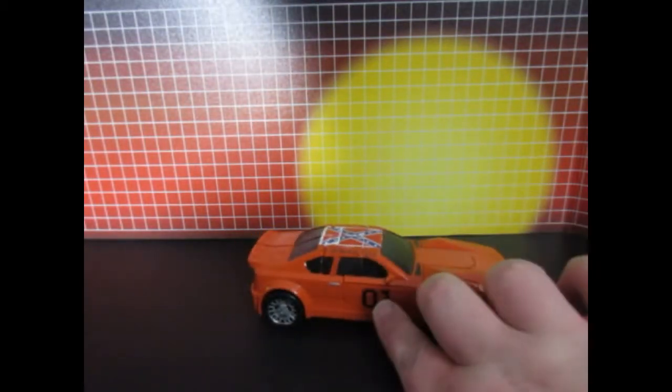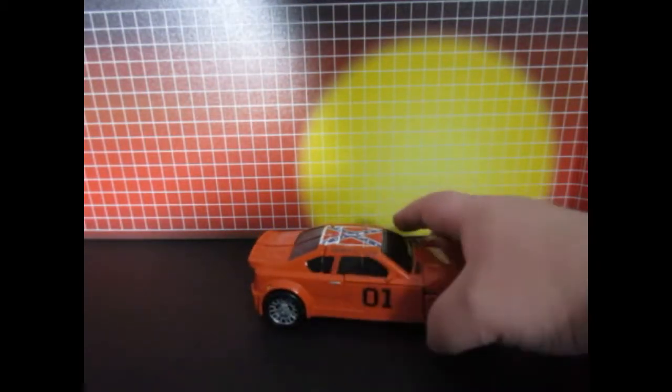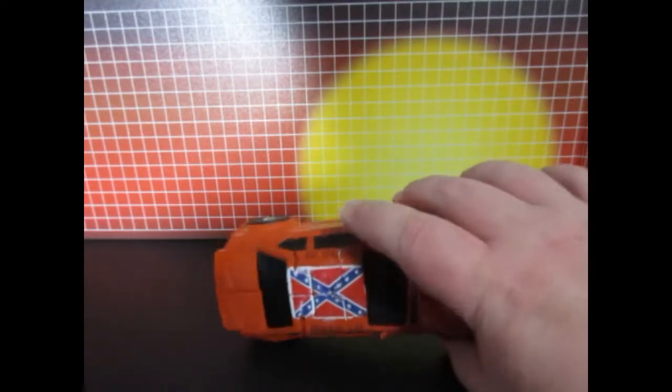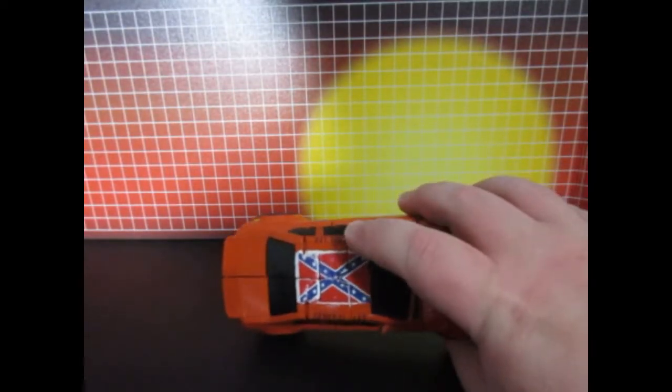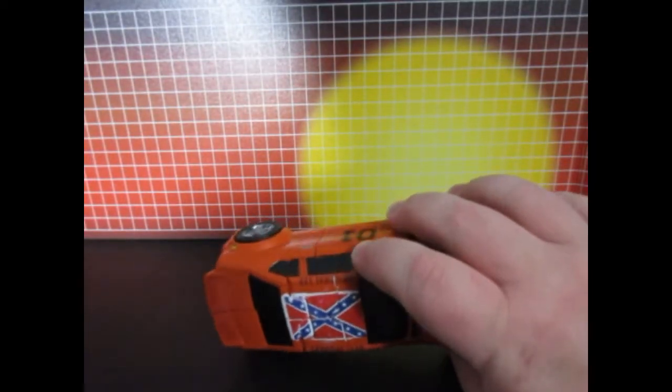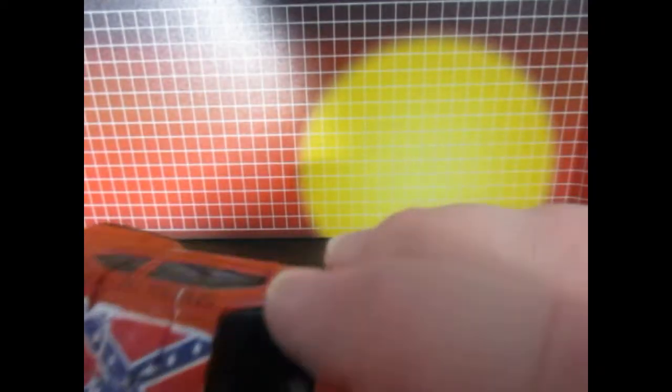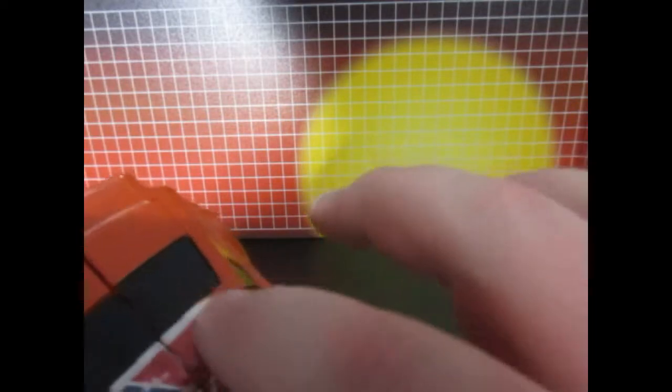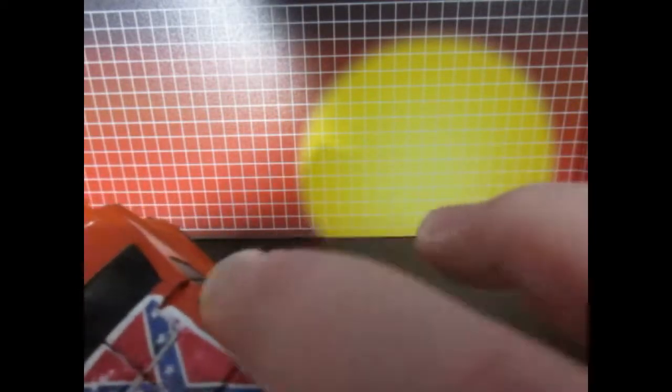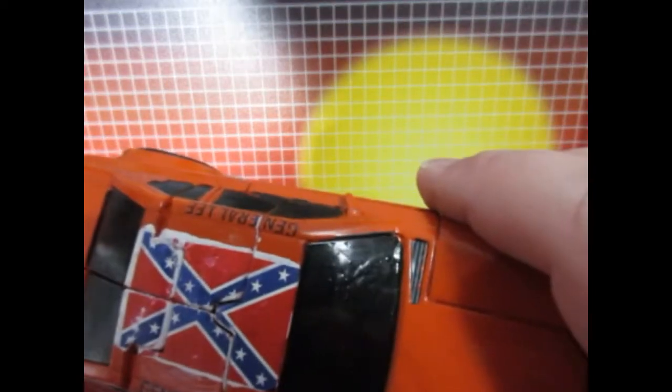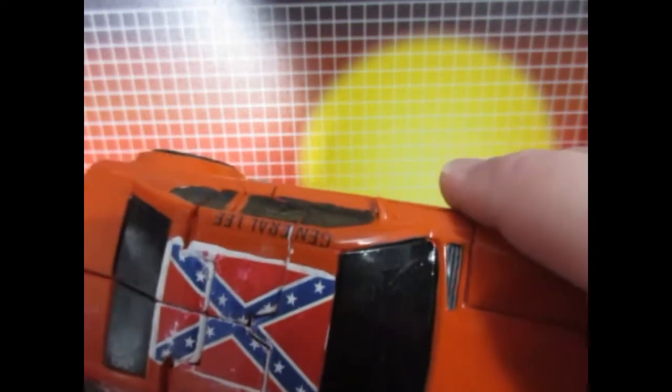Now these are model kit labels. Waterslide model kit labels. And you can see that this particular set was on a clear backing. So, I ended up having to paint a white background for this to even show up properly. It's not the best, but it's good enough.